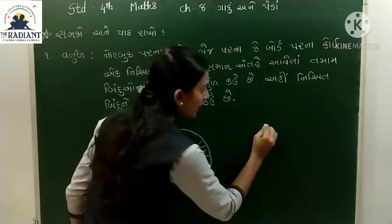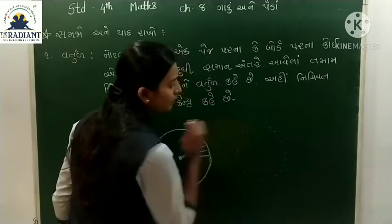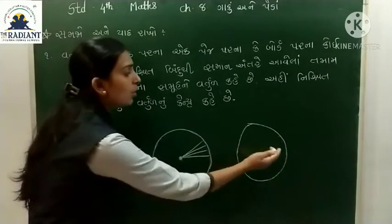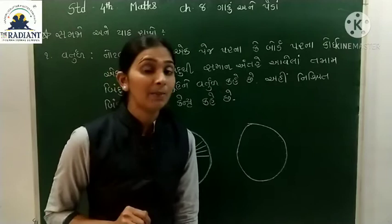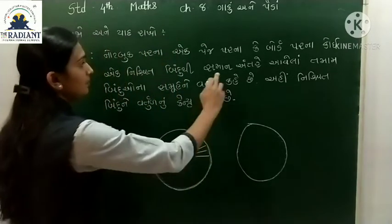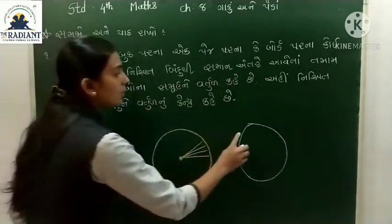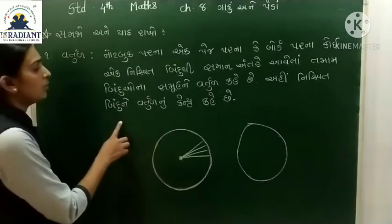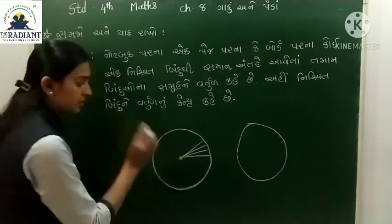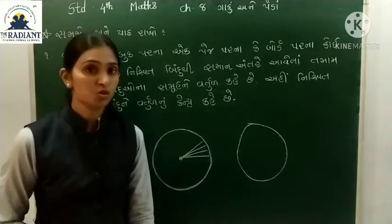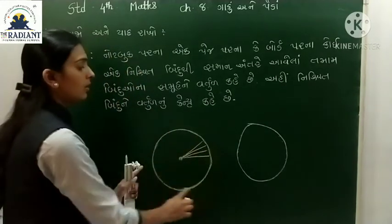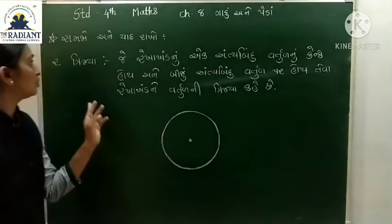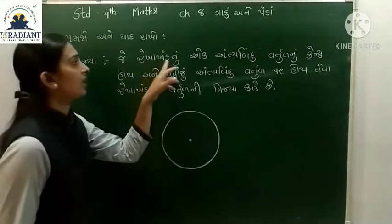આ બિંદુ થી સમાન અંતરે - કેન્દ્ર-બિંદુ ઉપર રાખીને - આપણે અલગ-અલગ માપના વર્તુળ બનાવી શકીએ છીએ. પહેલાં-સૌ-પ્રથમ આપણે ગોળ બનાવતા શીખ્યા, જ્યારે આપણે નાના હતા, ત્યારે. હવે આપણે ત્રિજ્યા વિશે જોઈએ.